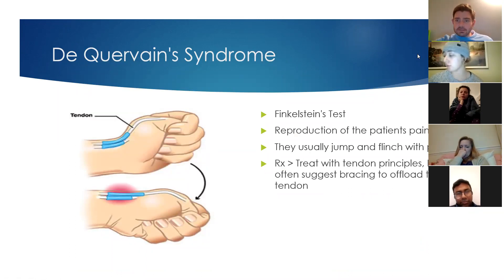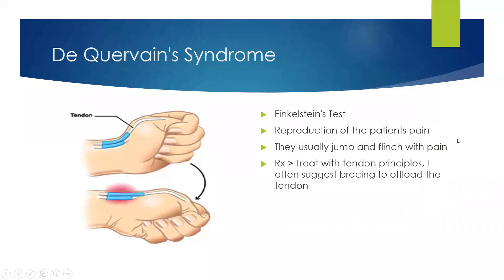De Quervain's syndrome: that's pain over the base of the thumb area. Finkelstein's test — I've got a video I'll show just now — it really does reproduce the patient's pain. When you do the test, I find patients often jump and go 'yes, yes, that's my pain.' It's a nice one to do over the phone or even over a video call and if it's positive it's usually pretty conclusive.